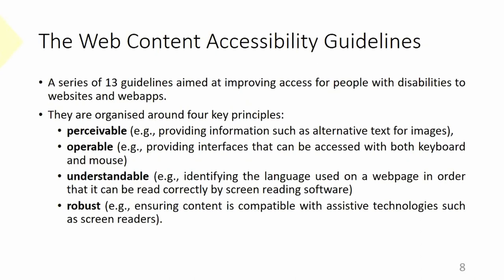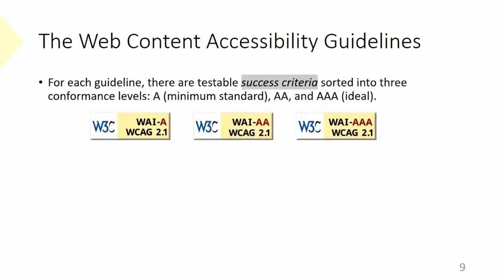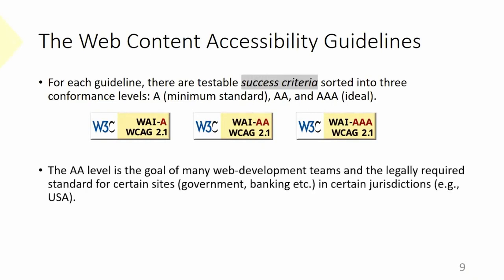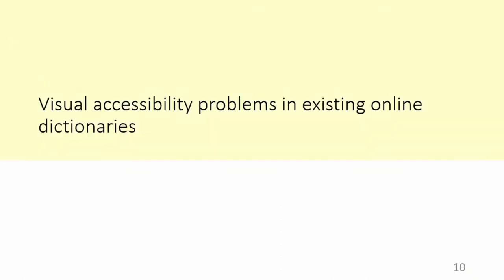And things need to be robust — it's no good having a website that breaks a screen reader or a screen reader that breaks a website. Really important is the idea of success criteria, a great strength of the accessibility guidelines, because it allows us to test and quantify how accessible websites are. These are sorted into three conformance levels, ranging from A, the minimum standard, to triple-A, the ideal. The double-A level is basically the de facto standard and the legal requirement in some countries. These guidelines have been used to investigate accessibility issues in existing online dictionaries.